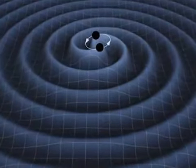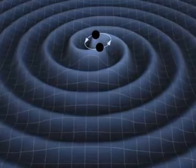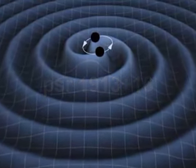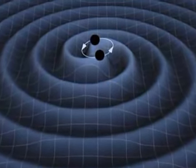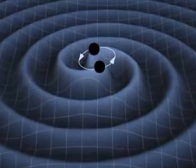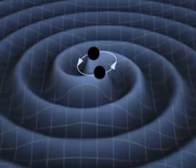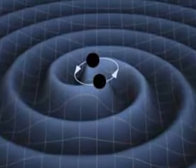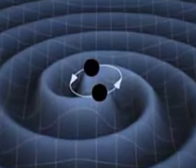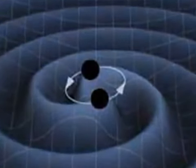By the 1960s, theorists had shown that if an object emits gravitational waves, its mass should decrease. Then, in the mid-1970s, American researchers observed a binary pulsar system named PSR 1913-16, thought to consist of two neutron stars closely and rapidly orbiting each other. Radio pulses from one of the stars showed that its orbital period decreased by 75 microseconds per year — meaning the stars are spiraling in towards each other by just the amount predicted if the system were losing energy by radiating gravity waves.